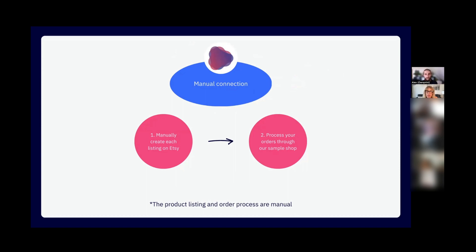If you don't want to use the automatic connection, you can use the manual connection — list each product manually on Etsy and process orders through our sample shop. However, as business owners you should be focusing on activities that grow the business and make more money. By doing everything manually, you're sacrificing valuable time. Also, once you find a winner on Etsy, having Shopify allows you to scale it with Facebook ads or TikTok. That's the beauty of Etsy — it's beginner friendly, and every listing is just 20 cents versus having to drive paid traffic with Shopify.